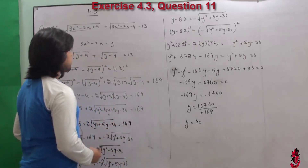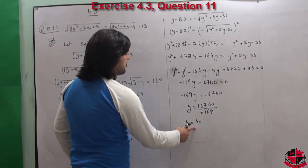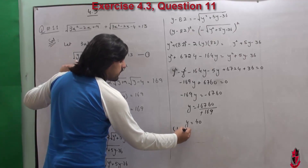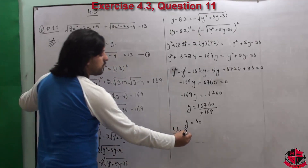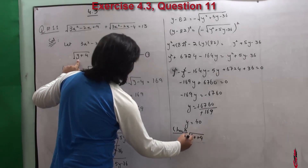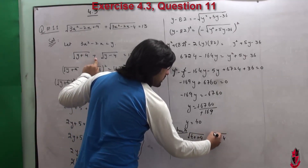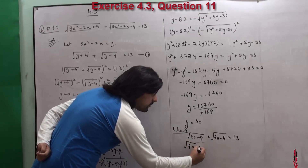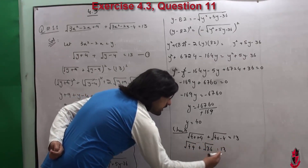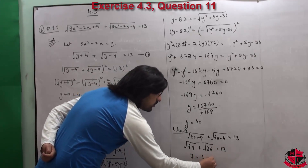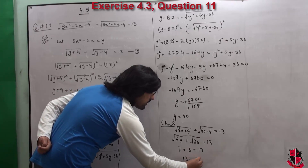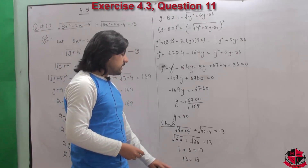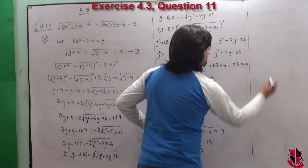अब हम लोग इसको check करेंगे whether it is an extraneous root or not. Put y = 40: √(40+9) + √(40-4) = √49 + √36 = 7 + 6 = 13. 13 = 13 ✓. So this is not an extraneous root — it holds true.